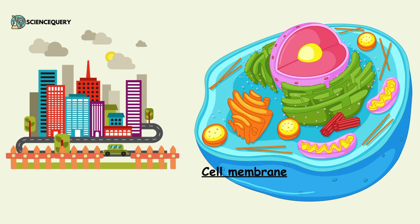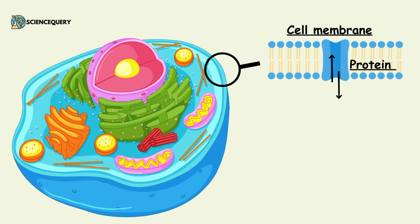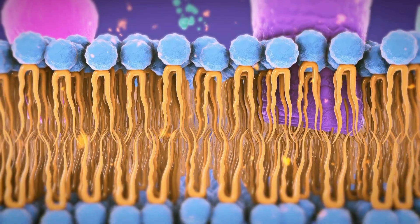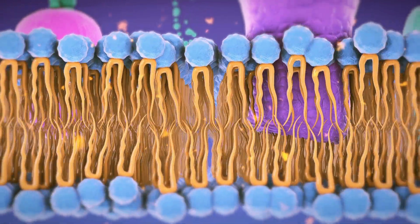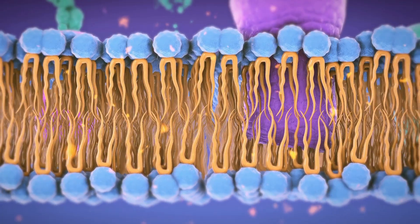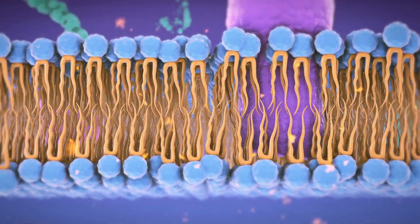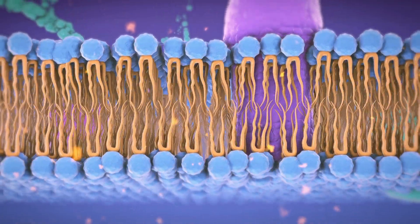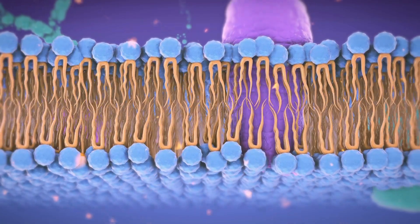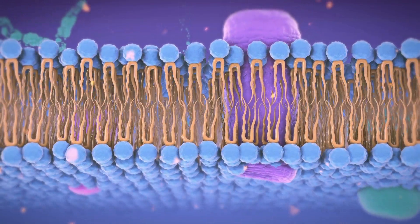First is the cell membrane. The cell membrane can be compared with the city boundary. Just like the city boundary, it acts like a selective permeable membrane with guards. It is made up of lipoproteins and is semi-permeable, allowing supplies in and out of the cell. The function of the cell membrane is to regulate the entry of solutes and ions in and out of the cell, and it maintains the shape of the cell.